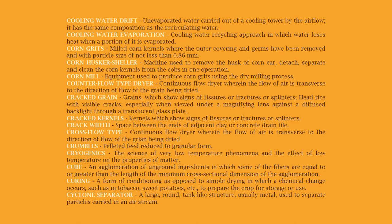Corn grits: milled corn kernels where the outer covering and germs have been removed, with a particle size of not less than 0.86 millimeters. Corn husker sheller: a machine used to remove the husk of a corn ear, detach, separate, and clean the corn kernels from the cobs in one operation. Corn mill: equipment used to produce corn grits using the dry milling process.